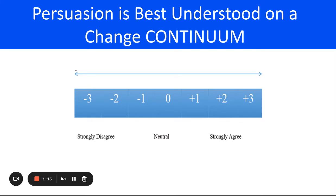Persuasion is best understood on a continuum. When we're speaking to an audience, we look at where they stand on the issue. Some people already agree with us — at plus one or plus two — and the goal is to move them to plus three or beyond. Others adamantly disagree, sitting on the negative side. By the end of your presentation, you may not completely persuade them, but your goal is to get them moving in the right direction — perhaps from negative three to negative one or even zero.